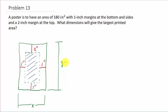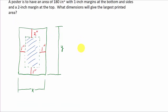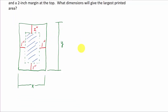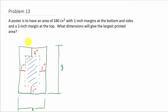So let's look at the information it gives us. First, it says a poster is to have an area of 180 square inches — that's the entire poster. So we know the area is x times y, so 180 equals x times y. That's the area of the poster.